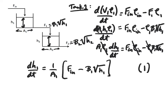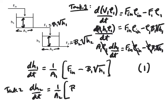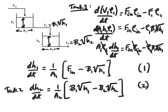Similarly, for tank 2 we end up with dh2/dt equal to 1 over the constant cross-sectional area a2, times the flow rate into tank 2, which is the nonlinear relationship from tank 1, minus the flow rate out of tank 2. So now we have our two nonlinear ODEs modeling this system.